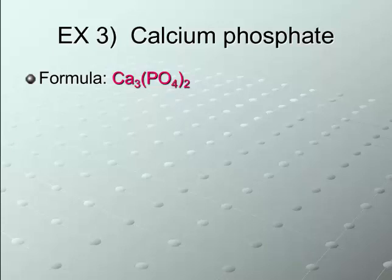Now, let's look at how many elements we have. Now, here, you do have to split up your polyatomic ion. You do have to split up the P and the O. So, we have calcium, we have phosphorus, we have oxygen.